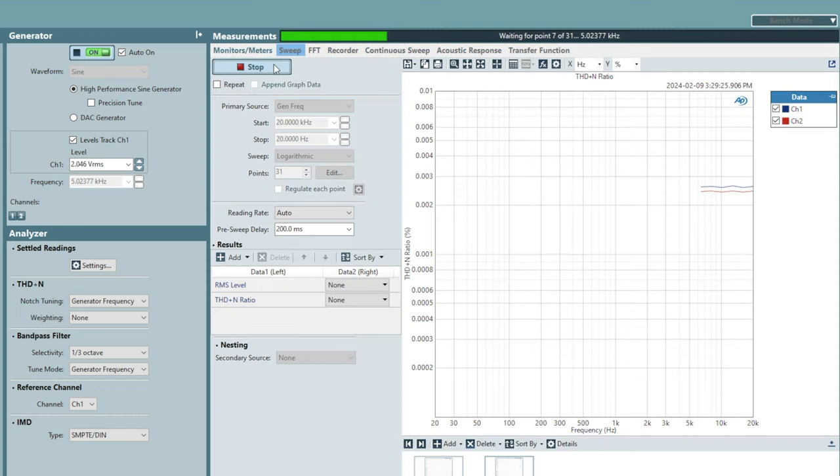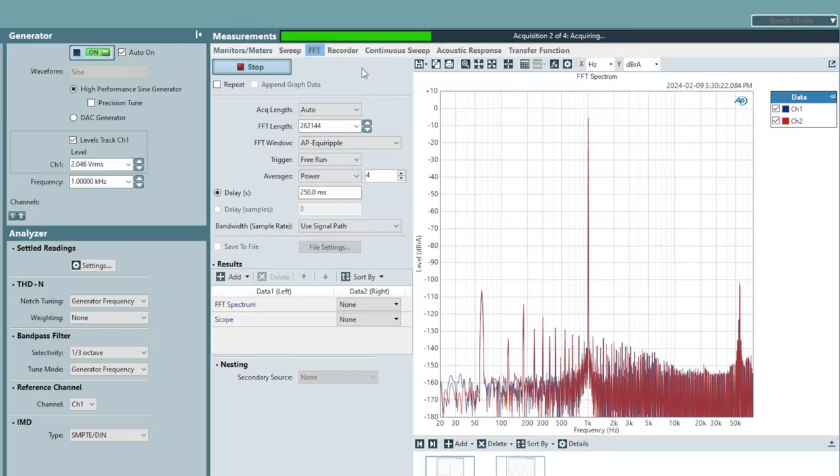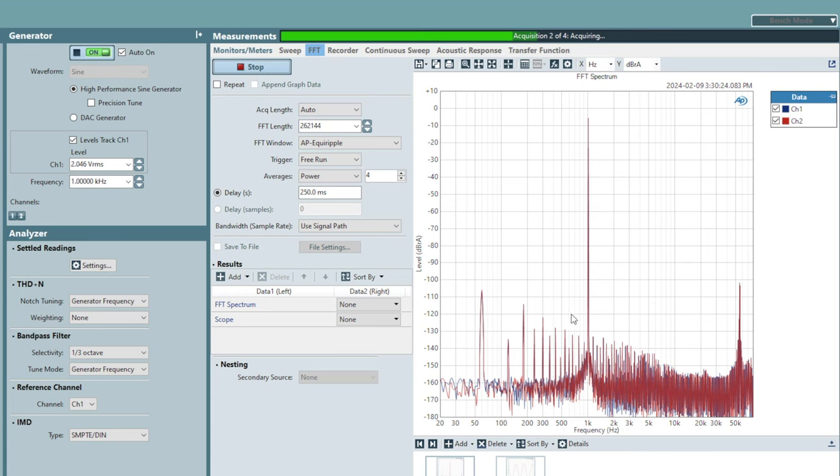And as we can see here in the distortion sweep, the distortion, or THD plus N, is actually quite high, even across frequency. And that's definitely not to spec. So I need to figure out what's going on here. And once the sweep finishes, I will take a quick look at the harmonic spectrum at the output of the buffer.